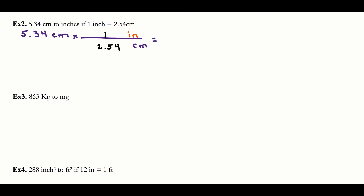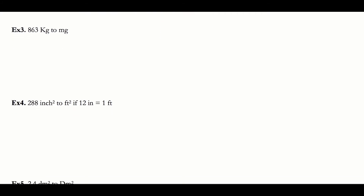I divide because 2.54 is in the denominator. The unrounded value I get is 2.10236. Remember, the 1 and 2.54 are a relationship, so I don't use those for sig figs. Looking at 5.34 — that has three sig figs, so my final answer needs three sig figs as well. I keep 2.10: the two does not round the zero up, giving 2.10 — three significant figures. My units are inches. So my answer is 2.10 inches.